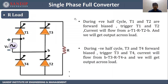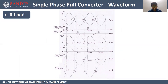Next is single phase full converter for resistive load. This is the circuit diagram, consisting of 4 thyristors T1, T2, T3, and T4, with a resistive load. We give AC input and get pulsating DC across the load. During the positive half cycle, T1 and T2 are forward biased — we trigger T1 and T2 to get the output voltage. During the negative half cycle, T3 and T4 are forward biased — we trigger T3 and T4 to get the output. The output current waveform has the same shape as the output voltage, but with smaller magnitude since output current equals voltage divided by resistance.